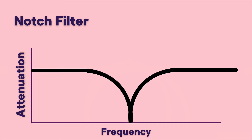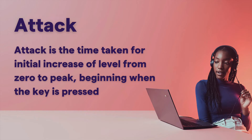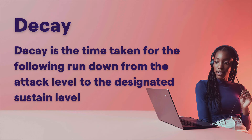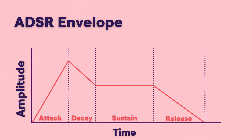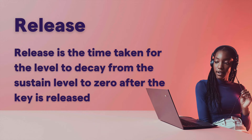The ADSR envelope includes attack, decay, sustain, and release. The attack is the time taken for the initial increase of level from zero to peak, beginning when the key is pressed. Decay is the time taken for the rundown from the attack level to the designated sustain level — basically, once maximum volume is reached, how quickly does the volume decay? Sustain is the level during the main sequence of the sound's duration until the key is released. Release is the time taken for the level to decay from the sustain level to zero after the key is released.